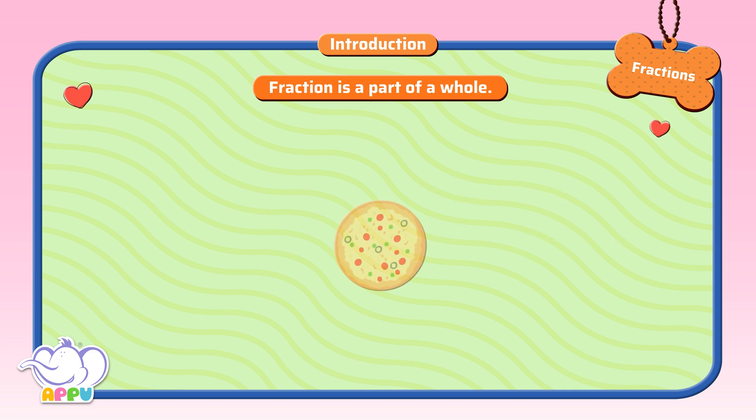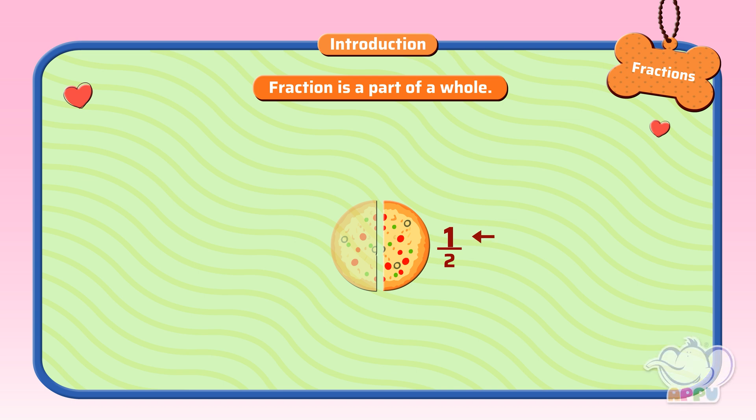If we cut a pizza into two parts, then each slice can be written as a fraction, which is one by two, which means one slice out of two. Here the numerator is one, and the denominator is two.